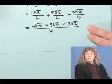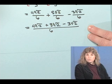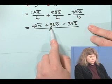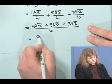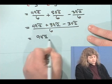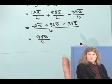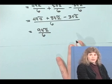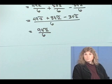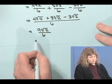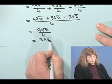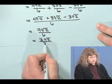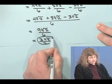Combine the coefficients, just like you would with ordinary fractions, times the square root of 2, divided by 6. Now we ask the question, can this be simplified? 6 divided by 3 is 2.